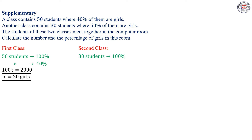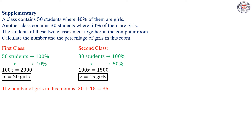In the second class, we have 30 students, they constitute 100%. We have 50% of them are girls. Then we have x girls. We make a cross multiplication and we get 100x equals 1500, then x equals 15 girls. Then the number of girls in this room is 20 from the first class and 15 from the second class, so 20 plus 15 equals 35 girls.